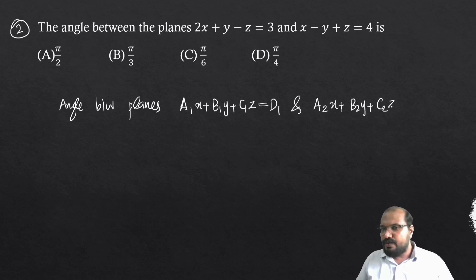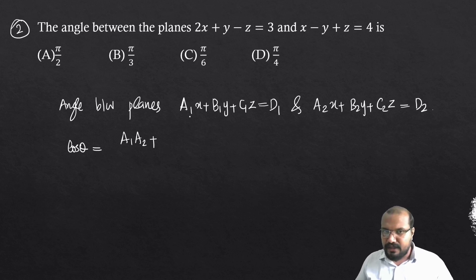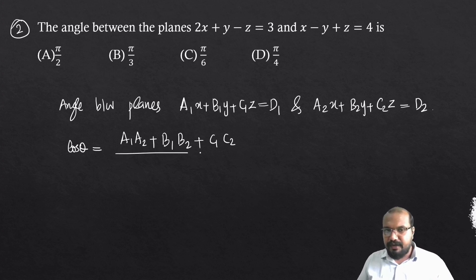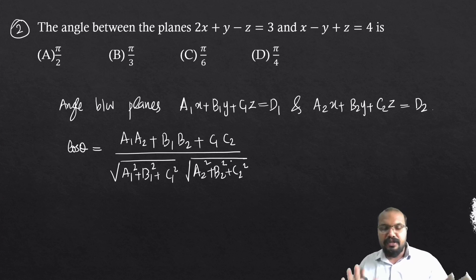For two planes a1x + b1y + c1z = d1 and a2x + b2y + c2z = d2, cos theta equals (a1·a2 + b1·b2 + c1·c2) divided by the square root of (a1² + b1² + c1²) into the square root of (a2² + b2² + c2²). This is our formula.